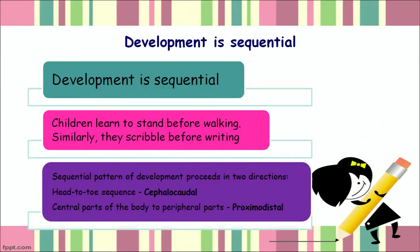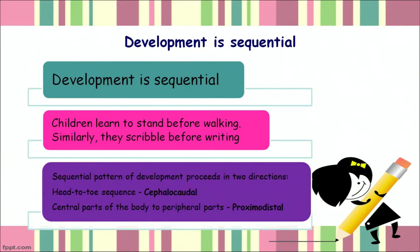The second very important principle is that development is sequential. Have you ever seen a child who starts walking and running first and then starts sitting? No — because development will always follow a particular sequence of events. Sequential patterns are primarily of two types: cephalocaudal and proximodistal.